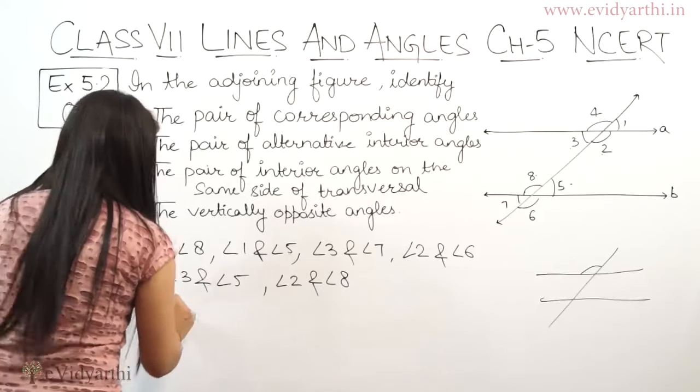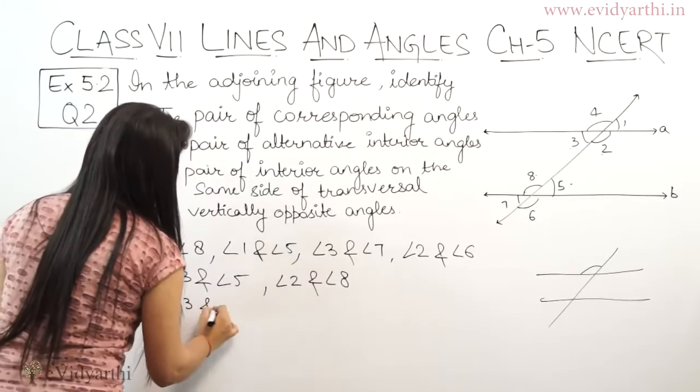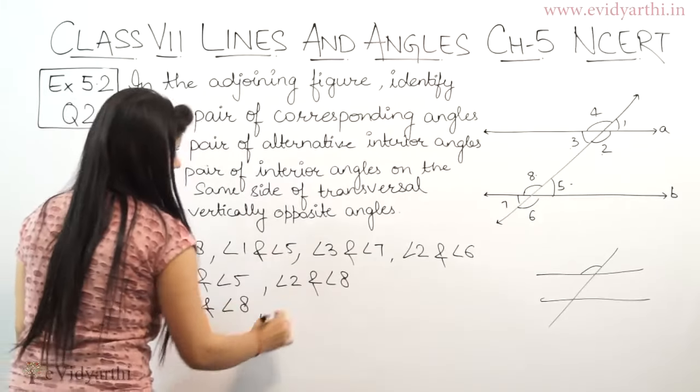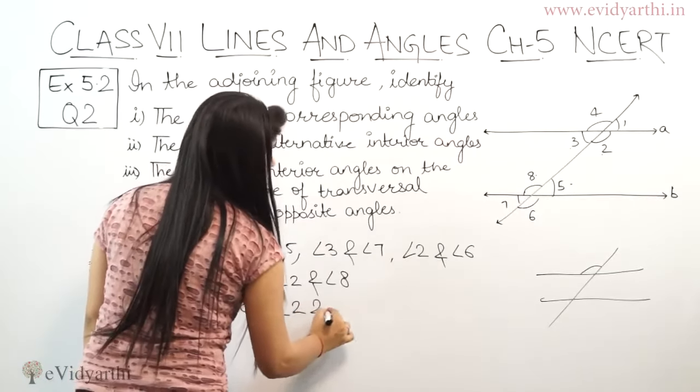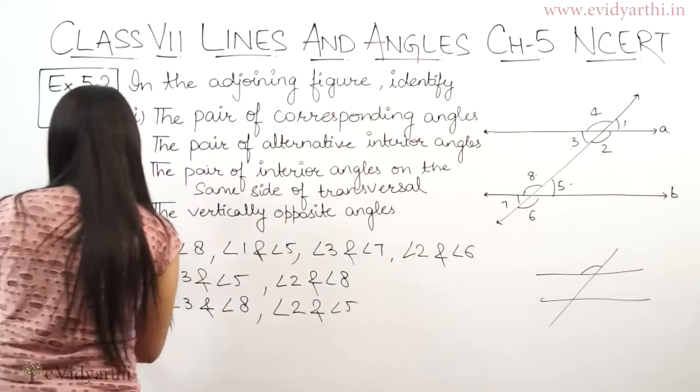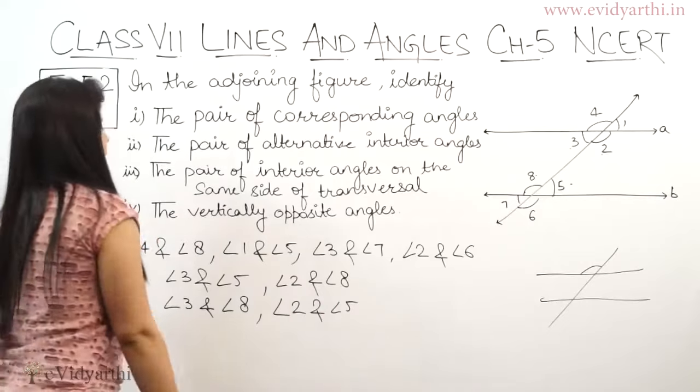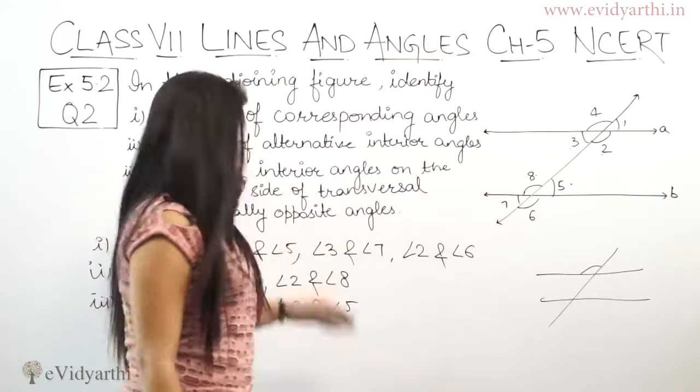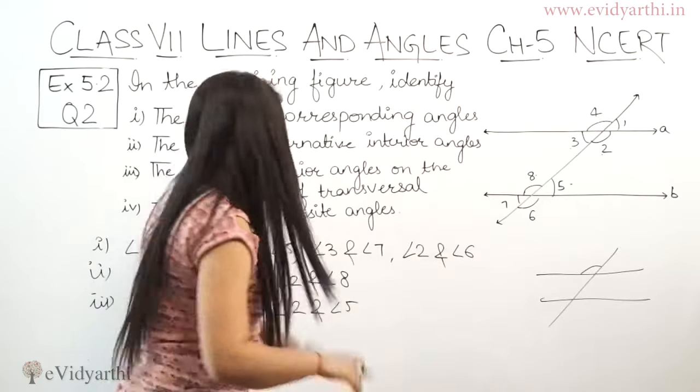So the angles are angle 3 and angle 8, similarly angle 2 and angle 5. So what are these angles? Pair of interior angles on the same side of transversal. Fine.